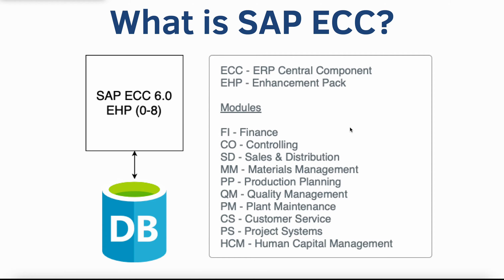First, what is SAP ECC? ECC stands for ERP Central Component. It is SAP's main ERP application that was initially released in 2004. Since then, it has gone through a lot of version updates and the latest version of SAP ECC is called EHP 8 or Enhancement Pack 8. It contains core modules such as finance, consolidation, payroll, procurement, and logistics. Gartner estimates around 35,000 customers globally use SAP ECC as their main ERP system to run their day-to-day business operations.